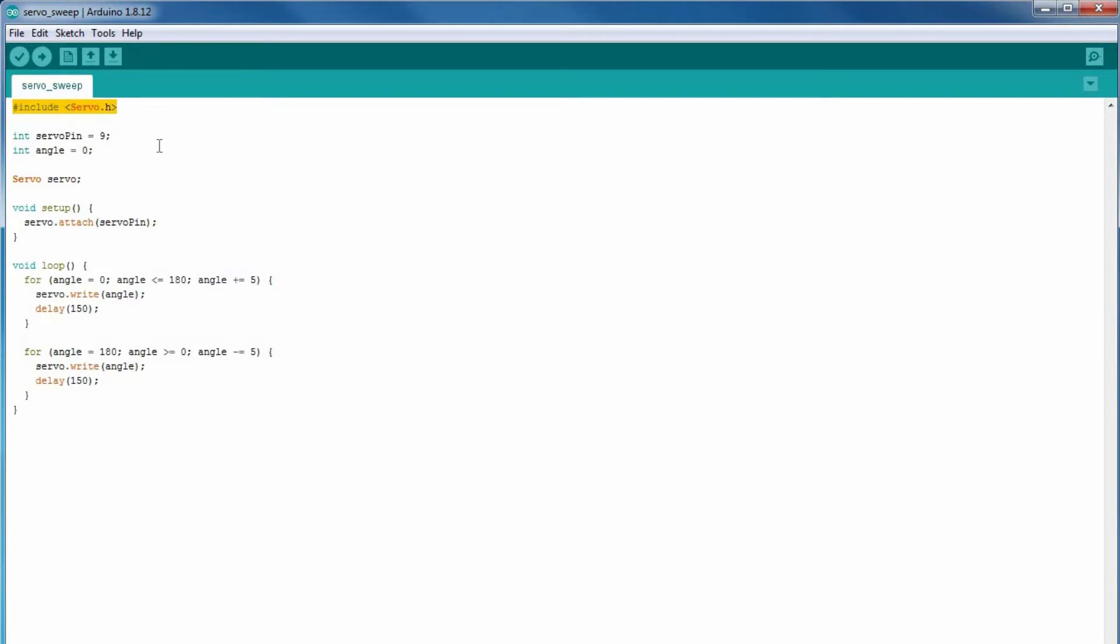This is a sketch. I'm using the servo library, declaring my variables first. In setup I'm attaching to pin D9. In loop I'm doing the sweep from 0 to 180 degrees, afterwards backwards.